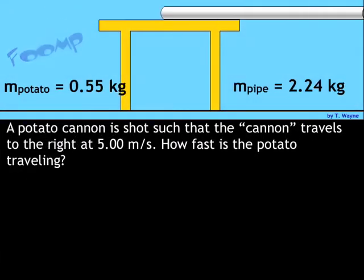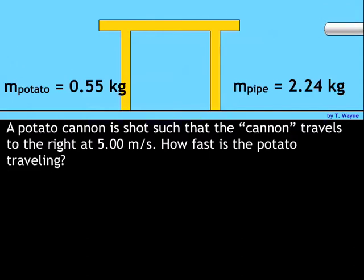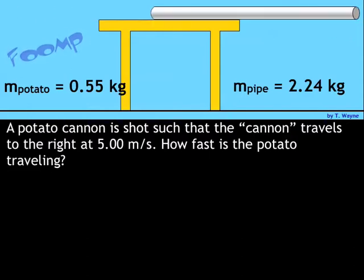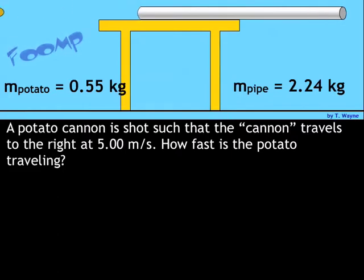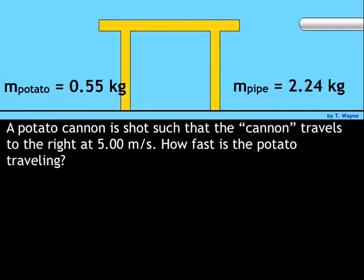So to begin with, I've got my potato cannon. It's going to shoot the potato one way, and then the cannon itself is going to travel the other way off the table. The potato cannon is shot such that the cannon travels to the right at 5 meters per second. The question is, how fast is the potato traveling?